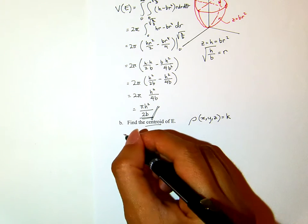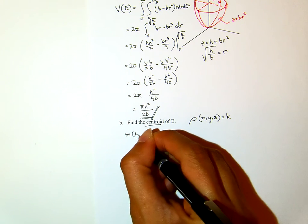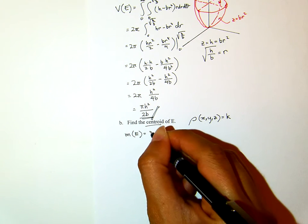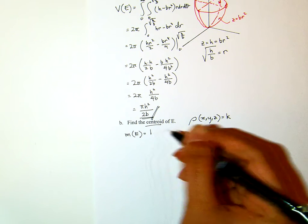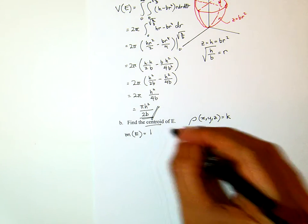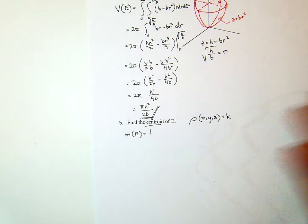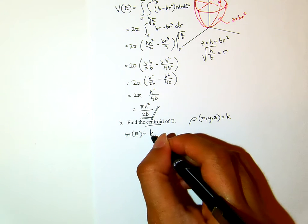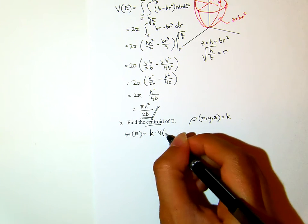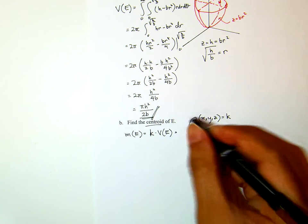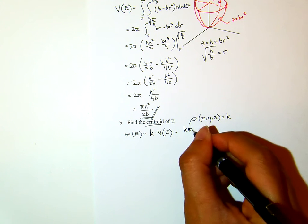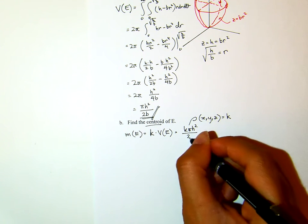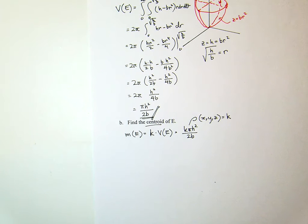So, the mass of solid E should be equal to, because it is a centroid, which means the density is uniform everywhere, the mass will be the density times the volume of E, which is k π H squared over 2B. That's the mass of E.